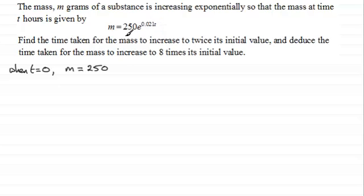So we're looking for when that mass now is doubled, so we're looking for when the mass is 500. So when m equals 500, then we've got therefore 500 will be equal to 250e to the power 0.021t, and we can cancel this into here: this goes once and that goes twice.